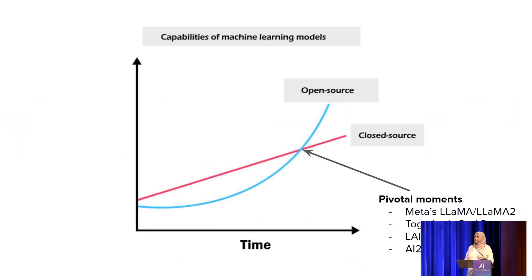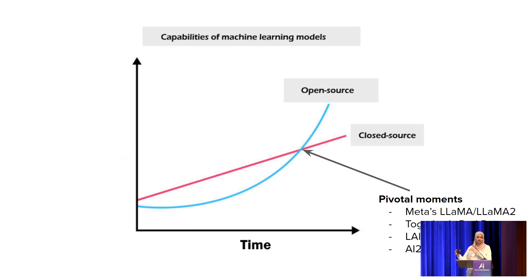This chart shows how progress in developing the capabilities of machine learning models happens when model access is open versus closed. For closed source, the growth is almost linear with time. But for open source, it lags behind closed source, and then there are pivotal moments — big releases or open source research artifacts — that help the open source community take things forward. Because there's a huge community, they can innovate in different spaces and pockets, and the growth and innovation just accelerates. Examples include QLoRA and LoRA, all happening thanks to open source models.